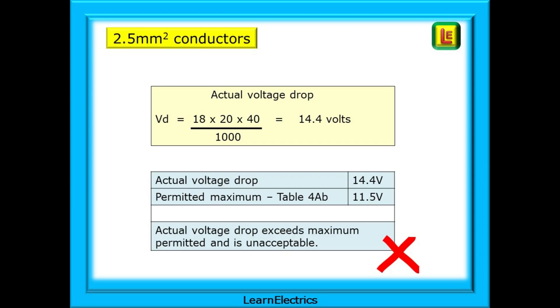For an acceptable circuit the volts drop will be equal to or less than that. This is the calculation for 2.5 square millimetre conductors. We are only interested in the line and neutral as we are assuming a fault free circuit. And 40 metres is the length just one way, not measured there and back. The actual voltage drop is 14.4 volts and is greater than the permitted 11.5 volts.